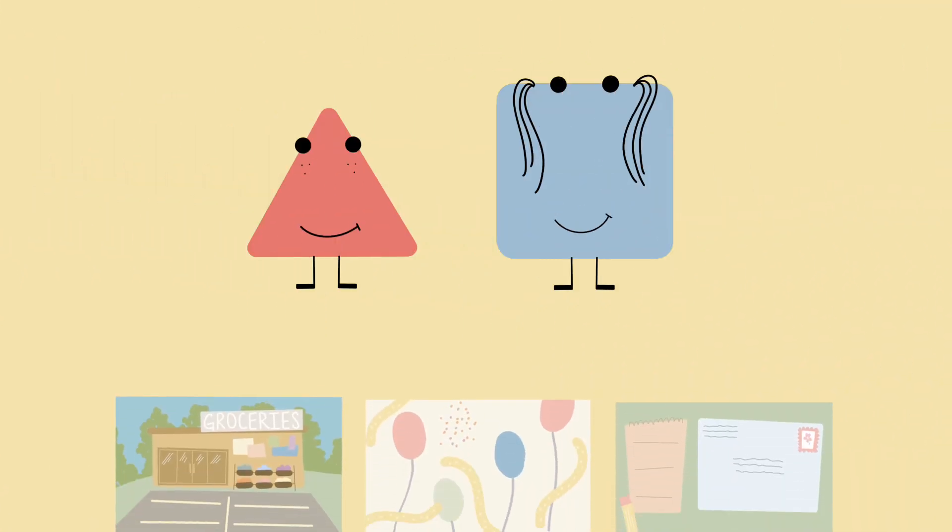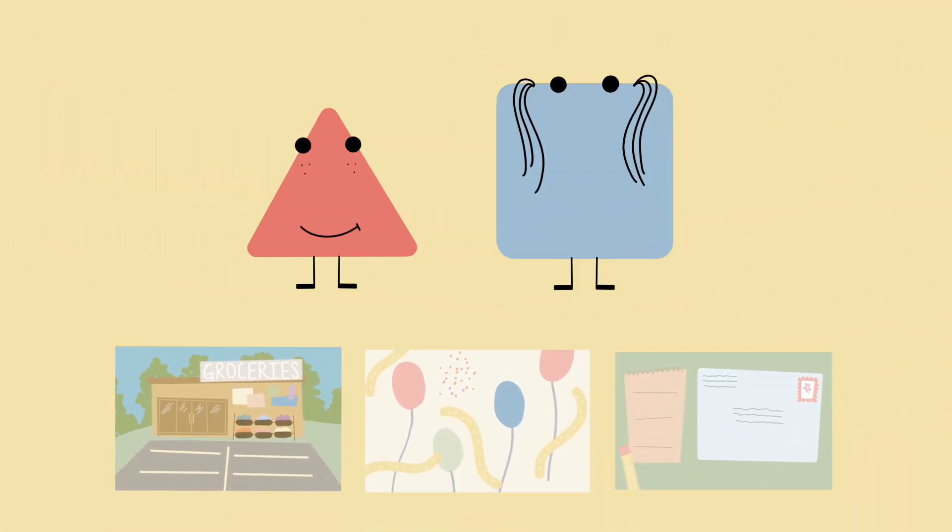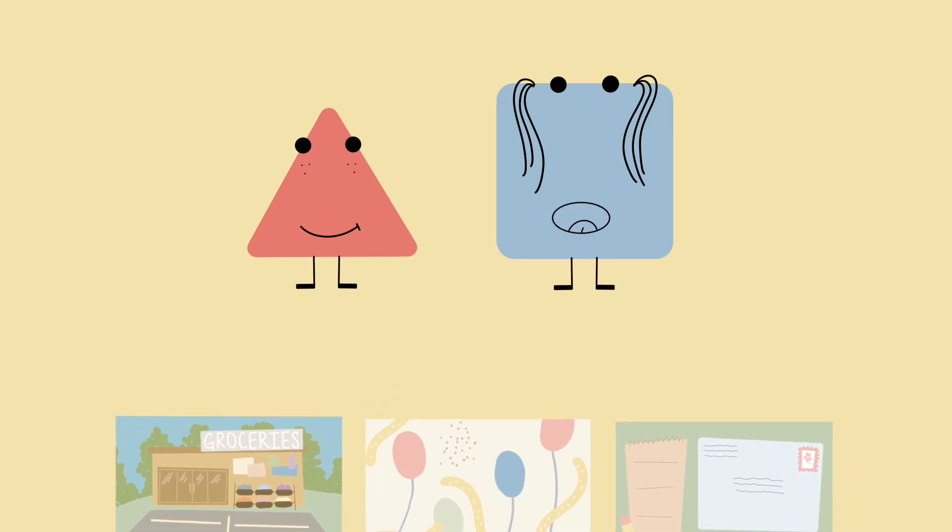There are three things we need to do before Circle's surprise party tonight. The first thing we need to do is go to the grocery store and get all the ingredients to make a birthday cake. That's not so bad. Next, we need to sort the party decorations. We can do that. And lastly, we need to write the names on the invitations. That sounds like fun! Are you ready to get started, Asher? All right! Our first task is to go to the grocery store. Let's go!